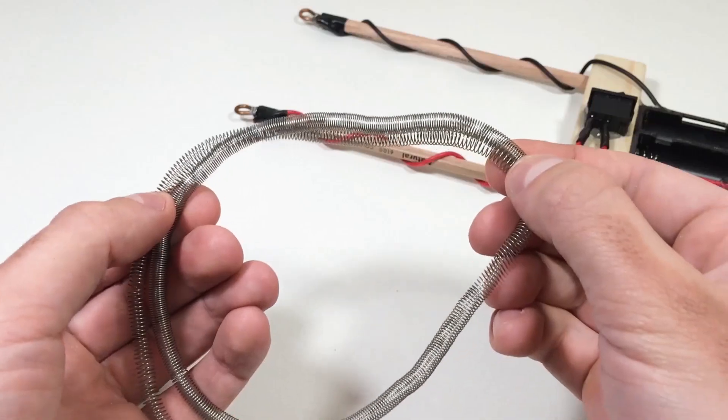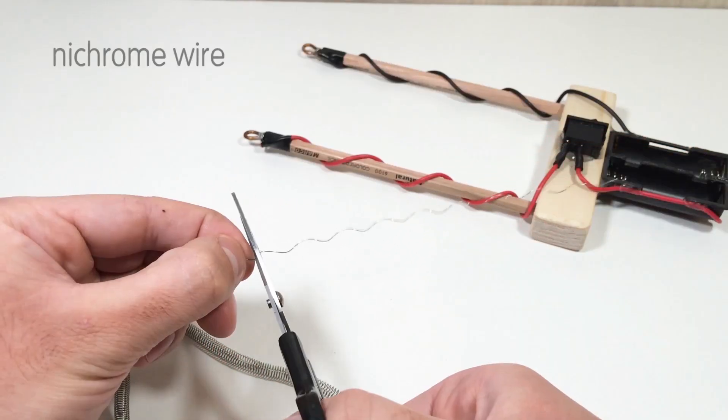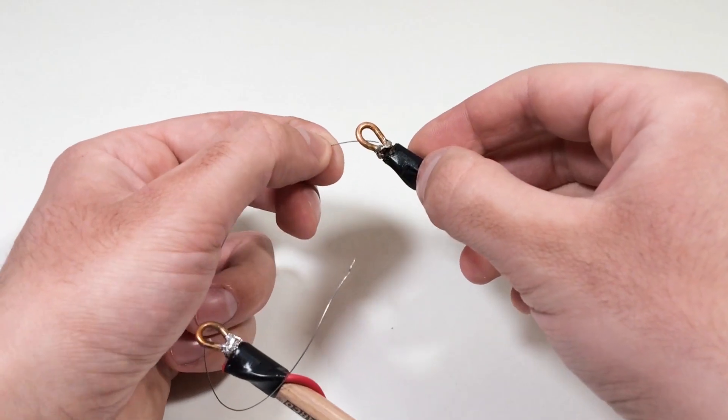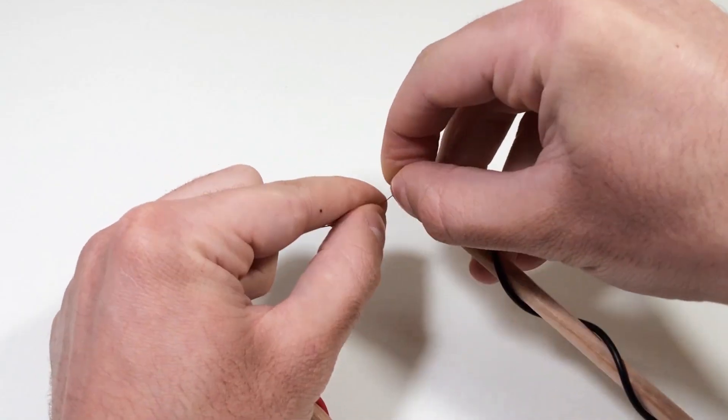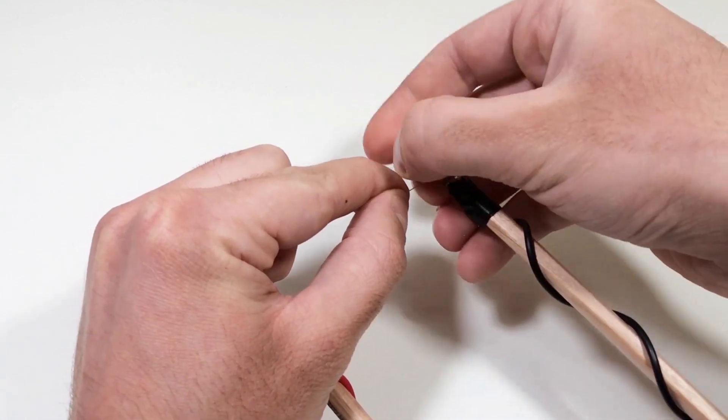Now for the most important part, the nichrome wire. This special alloy heats up quickly when electricity flows through it. Cut a piece about 4 inches or 10 centimeters long and stretch it between the two copper loops on the pencils. The tension should be moderate, not too tight, not too loose.